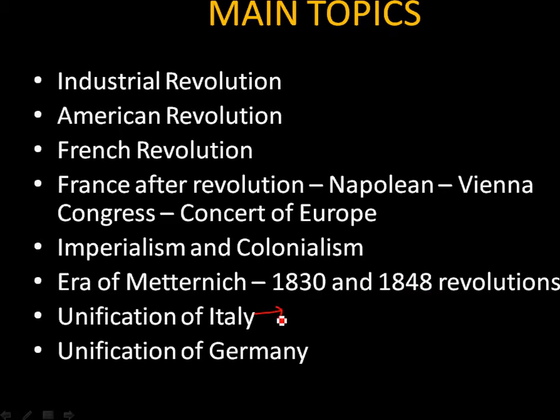In the Unification of Italy, we will look at the rise of nationalism, the main reasons for the failure of the revolts of 1848–49, the role of Garibaldi, and the role of foreign elements in the unification of Italy.